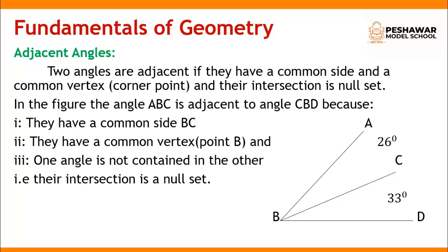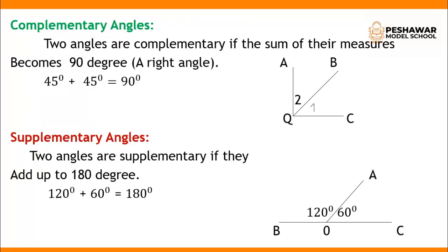So it is known as an adjacent angle. Now come to the next topic: complementary angles. The features of adjacent angles are: they have a common side BC, they have a common vertex at point B, and one angle is not contained in the other — their intersection is a null set. Now, two angles are said to be complementary if the sum of their measures is equal to 90 degrees.